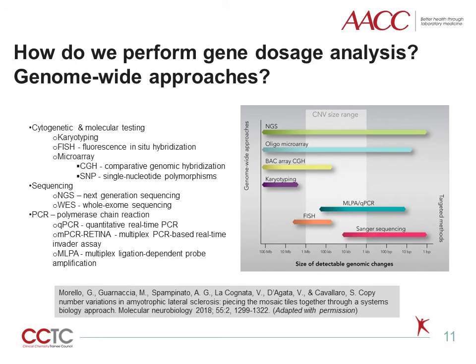How do we test for gene dosage effects? How do we perform gene dosage analysis? Under cytogenetic and molecular testing, we have karyotyping — looking at chromosome images to identify abnormal chromosome number or structure. We also have FISH, fluorescent in-situ hybridization, which is the first molecular method able to detect submicroscopic genomic CNVs, but it is time-consuming, requires prior knowledge of the regions of interest for probing, and is not used for genome-wide analysis. Microarray, on the other hand, is a genome-wide approach that lets us scan the entire genome for abnormalities, in particular CNVs.